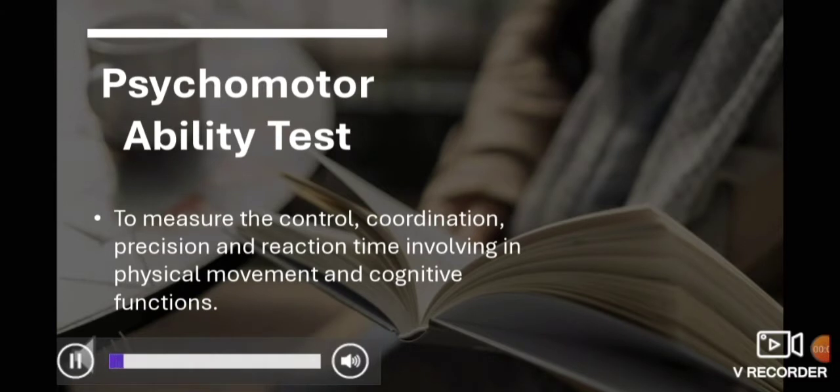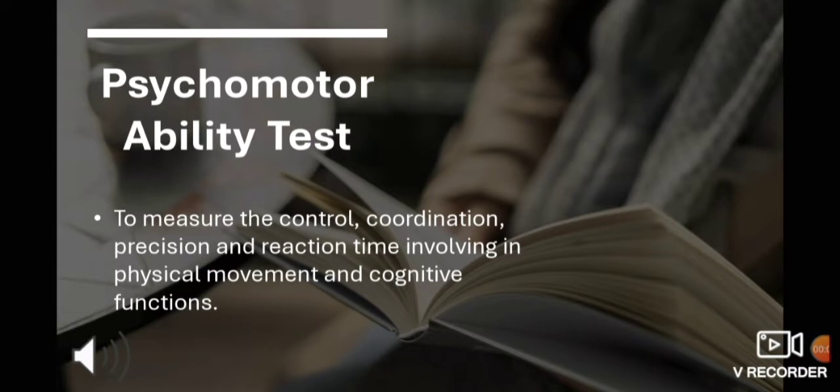Next is the psychomotor ability test. From the word itself, motor, which means physical movement, and psycho which is related to our cognitive functions. It measures the coordination between our body and mind. It focuses on dexterity or the skill of a person. Like for example, a carpenter who is skilled at working with wood. He can do that because it's directed by his mind and executed through his hands. Same as policemen, the way they shoot their gun requires focus and right accuracy.